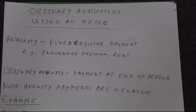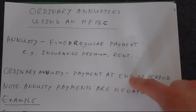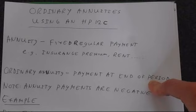An annuity is simply defined as a fixed regular payment, something like insurance premium or rent. An ordinary annuity is where you have the payment made at the end of each period. An annuity due has the payment being made at the beginning of the period.